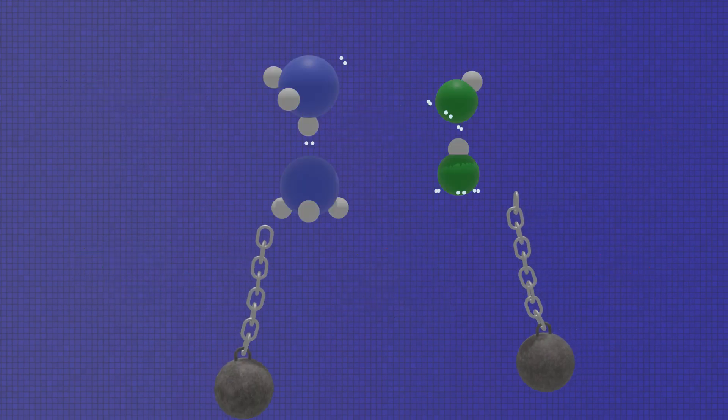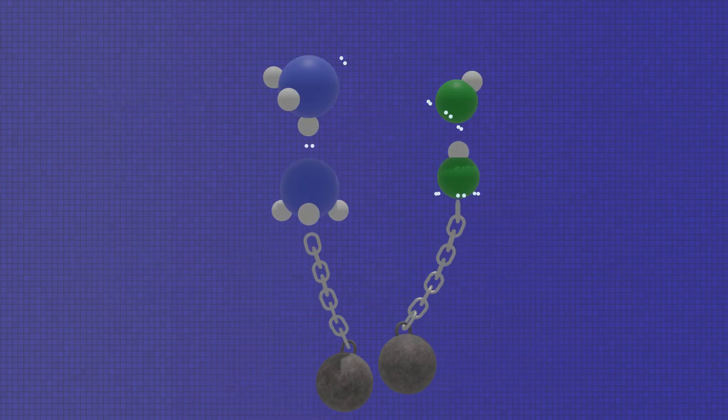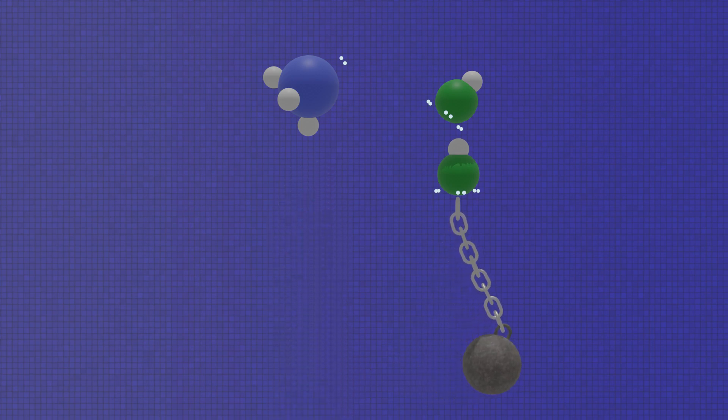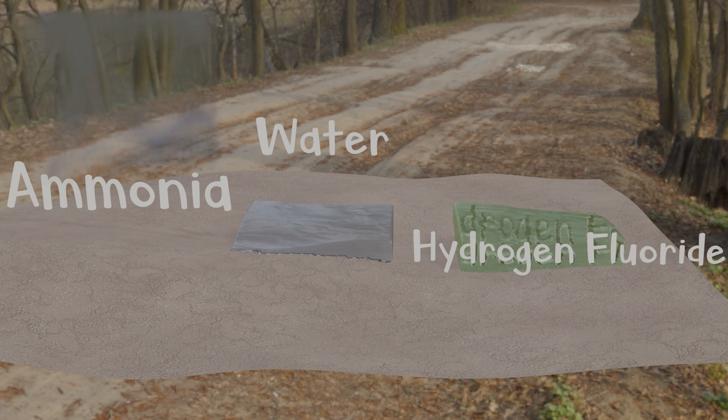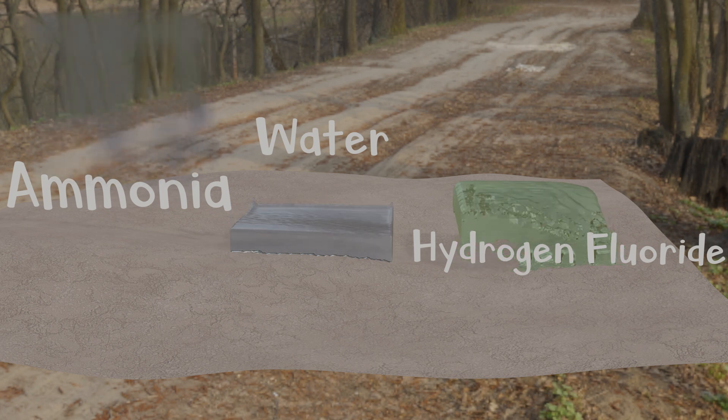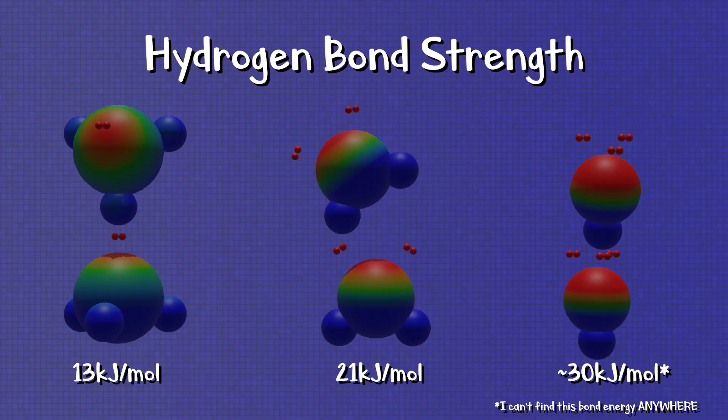The stronger the intermolecular bond between molecules, the more difficult it is to break it and cause a transition of state into a gas. So, it makes sense that ammonia exists as a gas while water remains liquid because water has a stronger polarity and, thus, stronger intermolecular bonds. But then, why does water remain liquid when hydrogen fluoride boils into a gas despite its stronger polarity and hydrogen bonds?